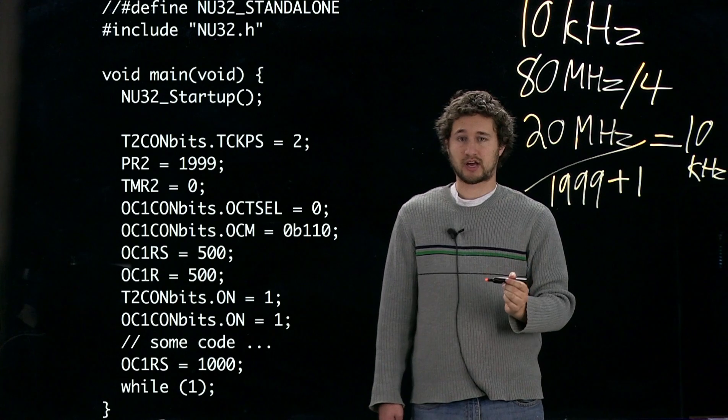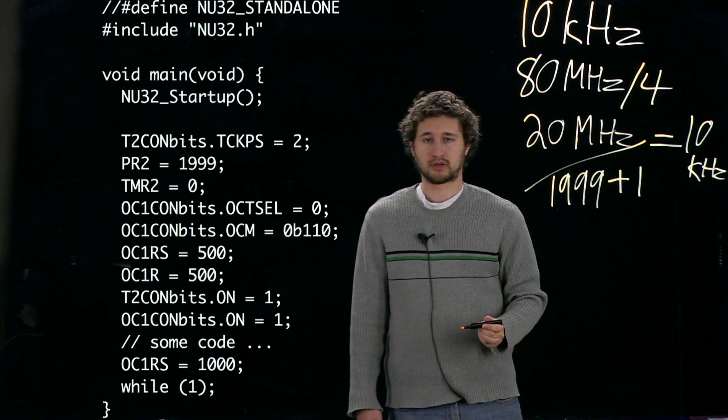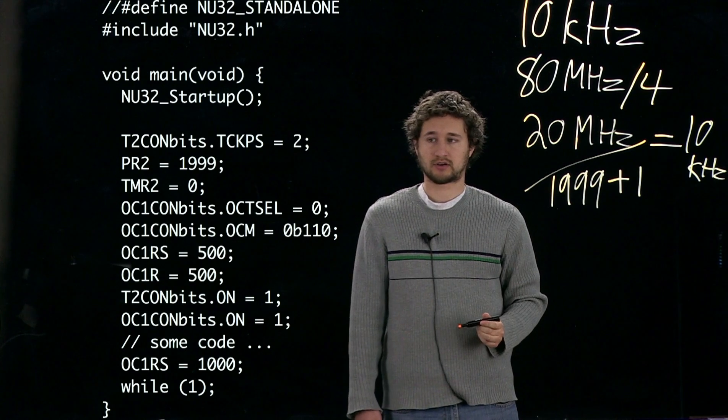The next thing we want to do is initialize timer 2 to 0. So that's this TMR2 equals 0 line.